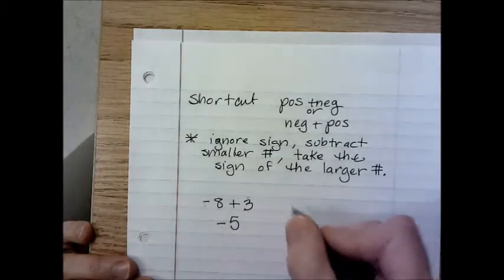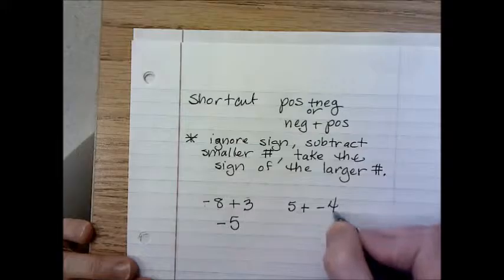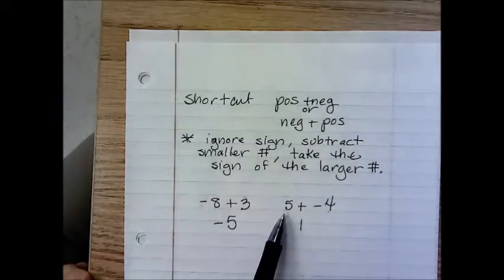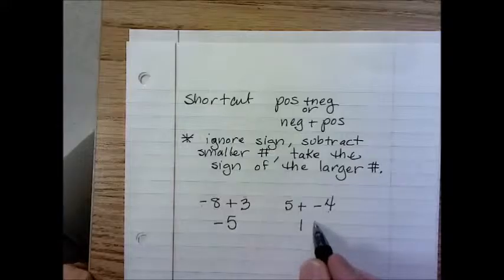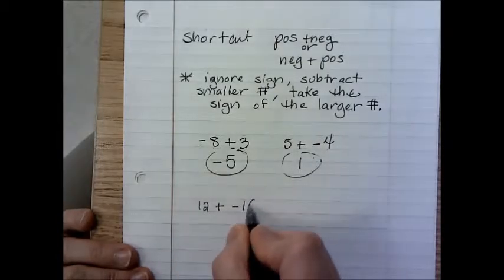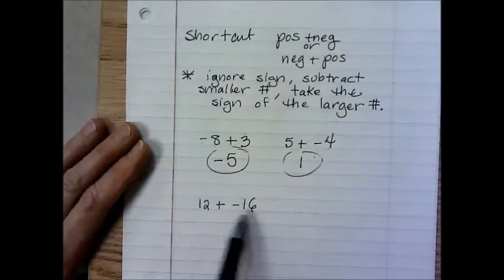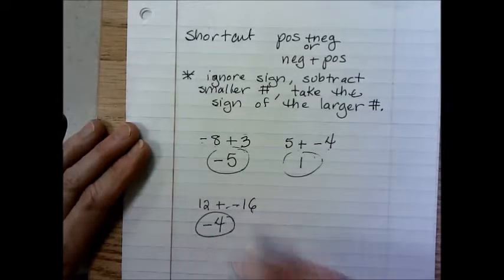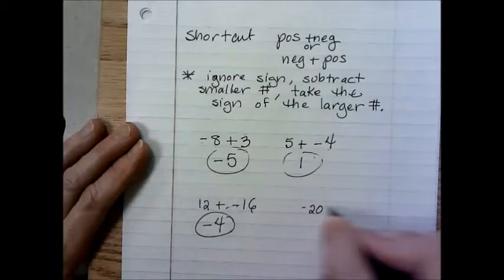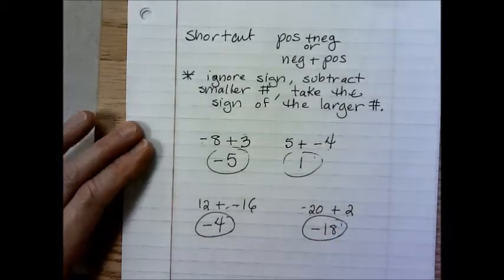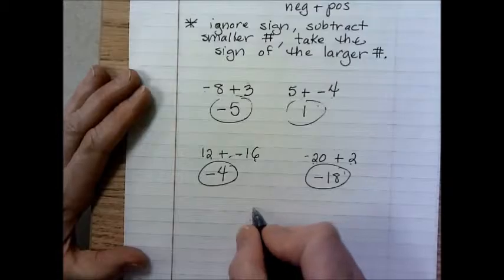Let's try it. Negative 8 plus 3: ignore the signs, subtract the smaller from the larger — 8 minus 3 is 5. Eight is larger and it's negative, so the answer is negative 5. For 5 plus negative 4: ignore the signs, 5 minus 4 is 1. Five is larger and it's positive, so the answer is positive 1.